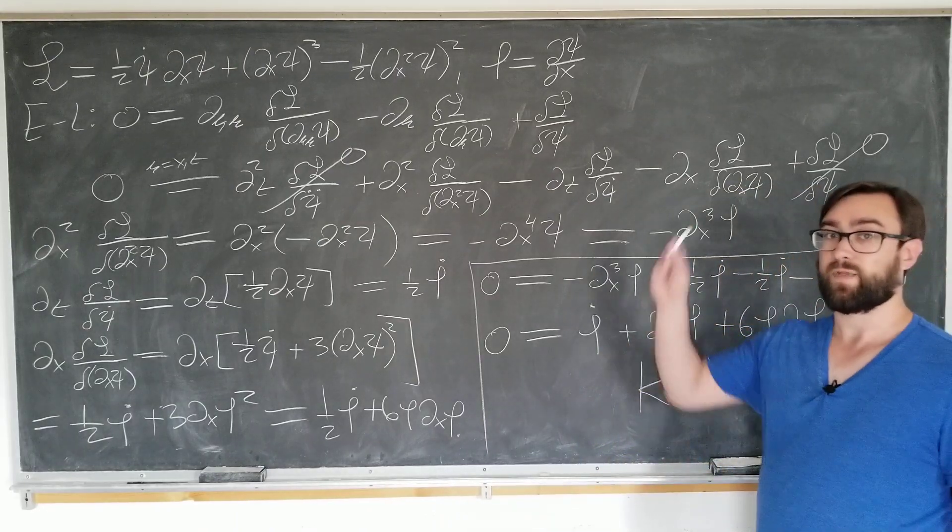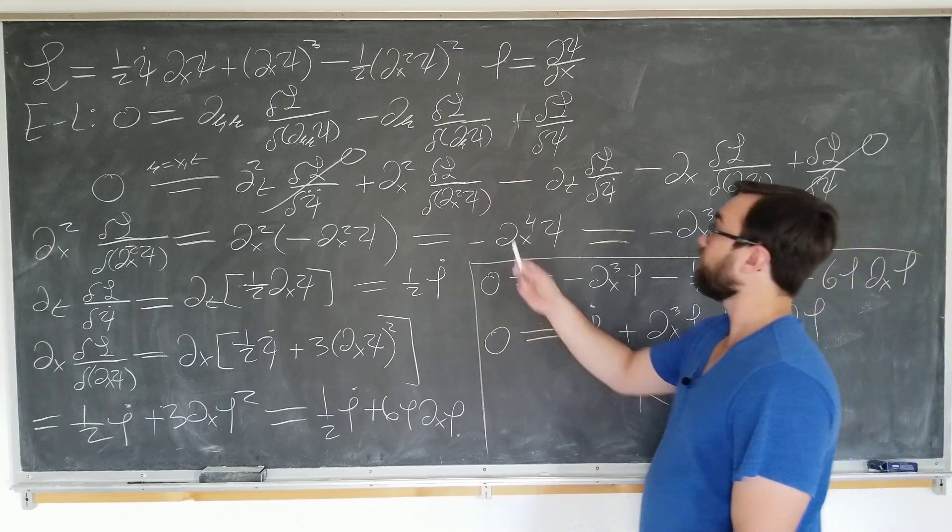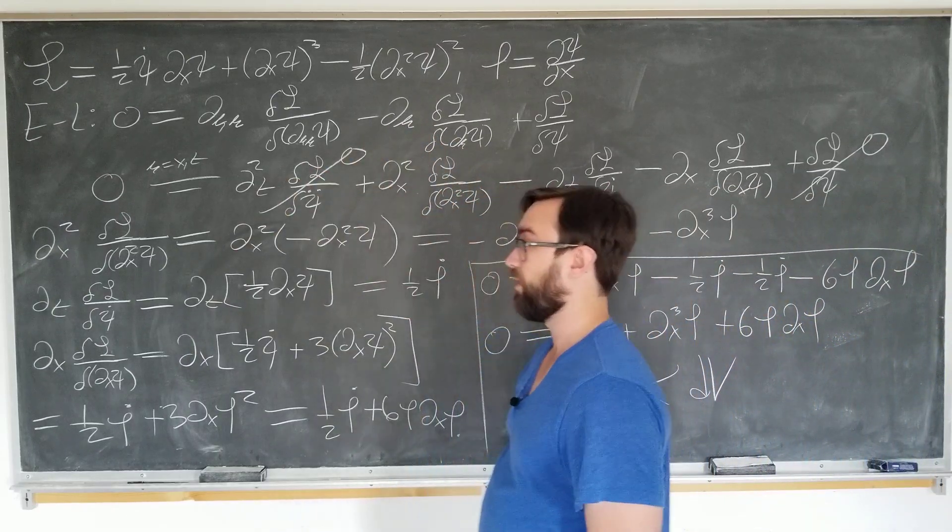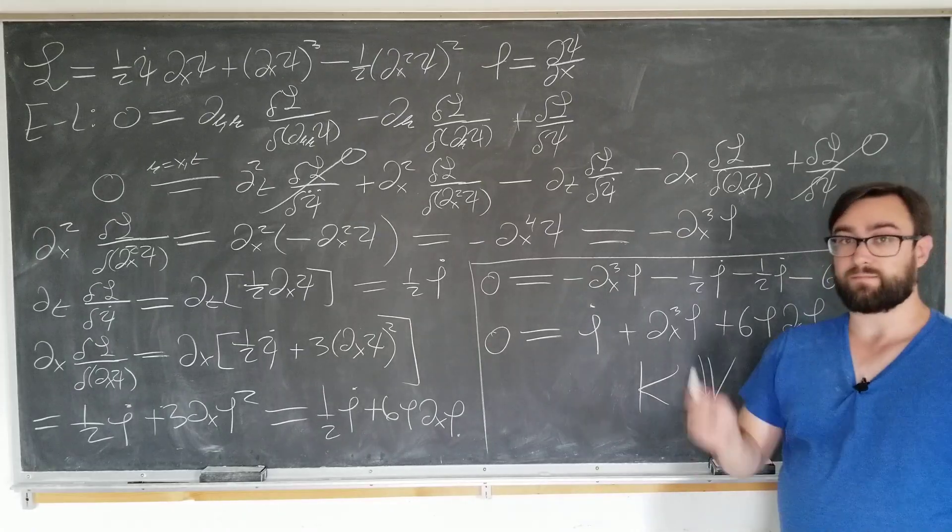We have derived it from this Lagrangian. We know where the factor of six comes from. Just two factors of one-half in Lagrangian. Pretty cool. If you enjoyed this and want to see more, please subscribe. See you next time.